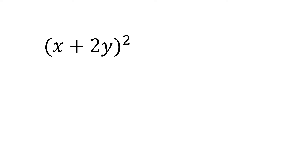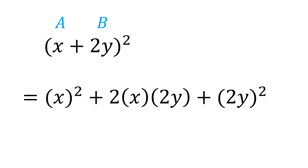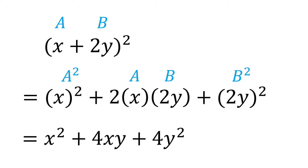In this case, we have a as x and b as 2y. Now instead of using the FOIL method, just take the square of x plus twice the product of x and 2y plus the square of 2y, which is equal to x squared plus 4xy plus 4y squared.